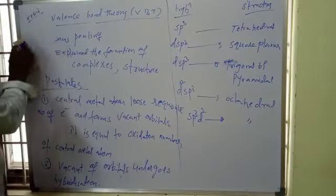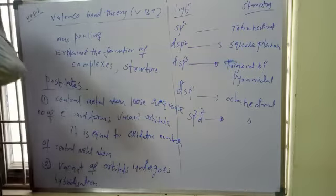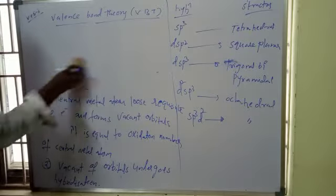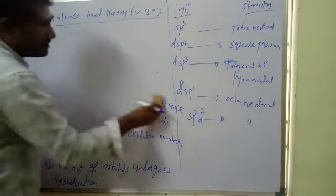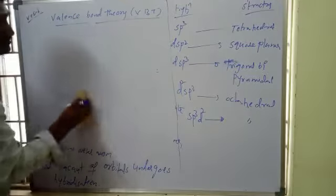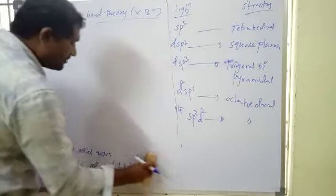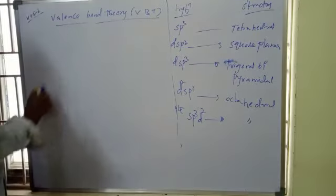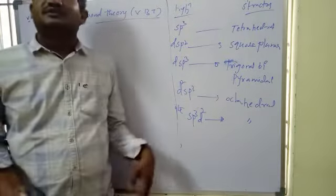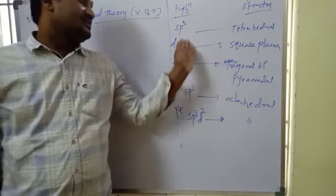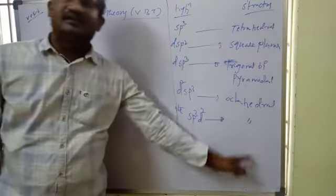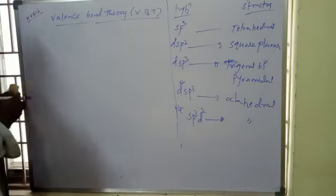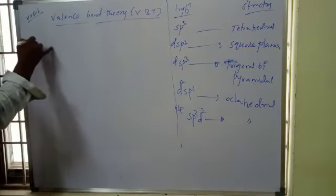So in summary, according to Valence Bond Theory, the central metal atom loses a requisite number of electrons, forms vacant orbitals, those orbitals undergo hybridization, and based on that the molecule adopts a particular geometry or structure.